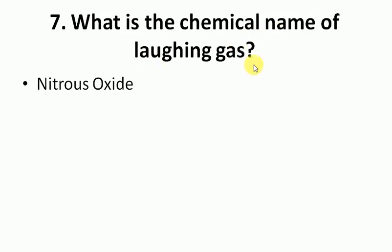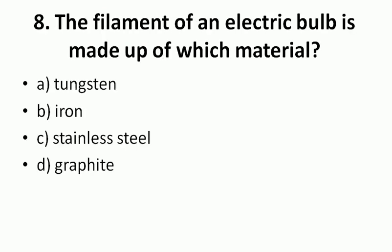What is the chemical name of laughing gas? Nitrous oxide is the chemical name of laughing gas. The filament of an electric bulb is made up of tungsten.